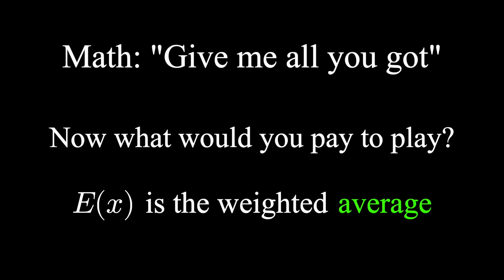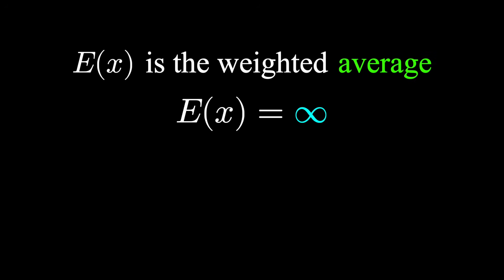Expected value computes the weighted average of all possible events. In this case, an infinite number of them with exponentially decreasing chances of occurring. Just because the average is infinite, it doesn't mean it would be the value to an individual player.